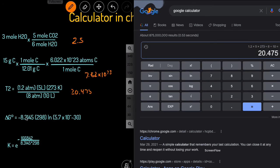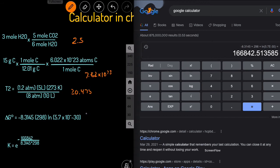Next expression, we have this function ln. So to enter it, we do negative 8.3145 times 298 times ln of 5.7. And then again, we have that times 10 to the power. So we can just use the e negative 30. And then we should get this number 166842.